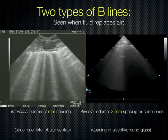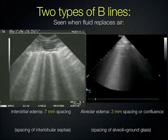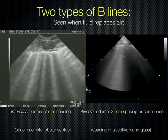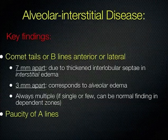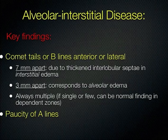To review: the key findings in pulmonary edema or alveolar-interstitial disease — which can be cardiogenic, non-cardiogenic, or due to fibrosis — are that there's no air, something else has replaced it in the interstitium, so your A-lines are gone. And then you have comet tails going all the way to the edge of the screen, multiple and in multiple fields.